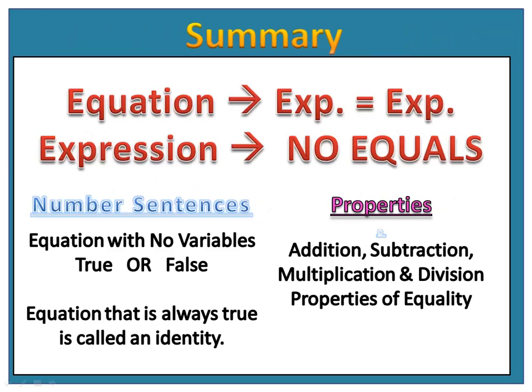Here's what you need to remember: an equation is an expression equal to an expression — it has an equal sign connecting two expressions. A number sentence is an equation with no variables, and it has a true or false value. An equation that is always true is called an identity. The addition, subtraction, multiplication, and division properties of equality are the foundation for all equation solving.